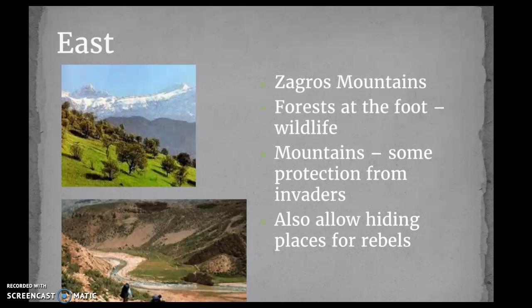In the east, you've got some of the same things — the Zagros Mountains again. Forests at the foothills provide wildlife and resources, and the mountains give you some protection from invaders. One thing worth mentioning is that mountains also allow for a lot of hiding places for rebels. If you've got nomadic tribal groups wandering around looking for a place to invade, they can very easily hide in mountains and the foothills. So mountains are good for large-scale invasion defense, but in terms of small-scale nomadic groups, they do provide some shelter.